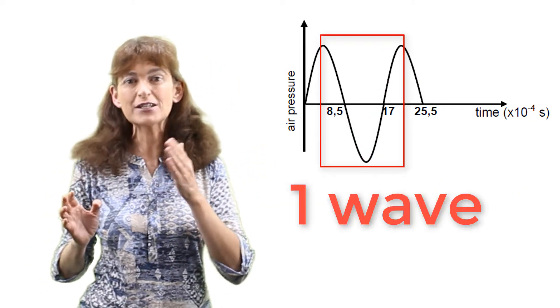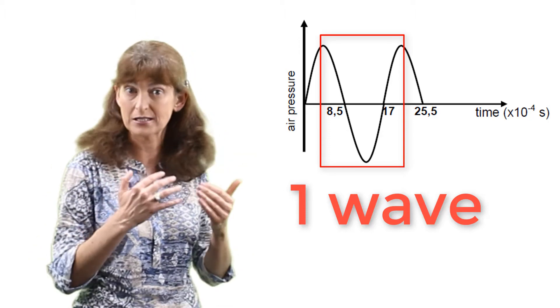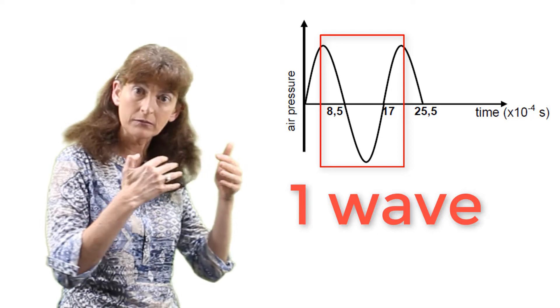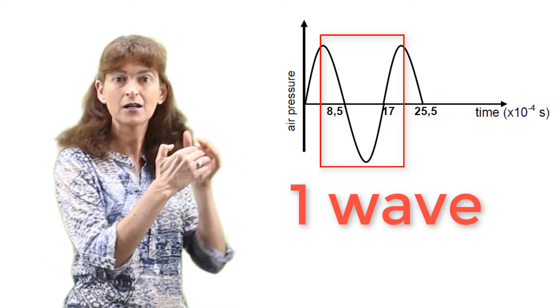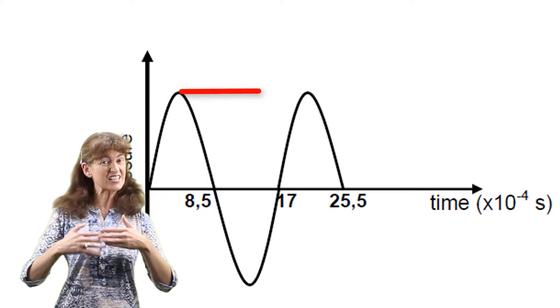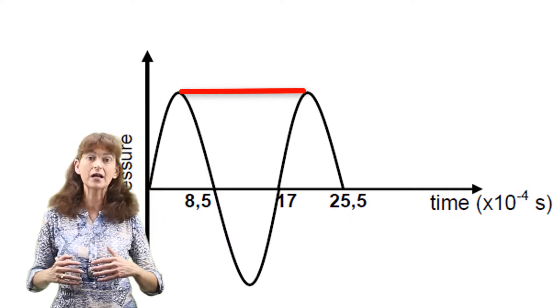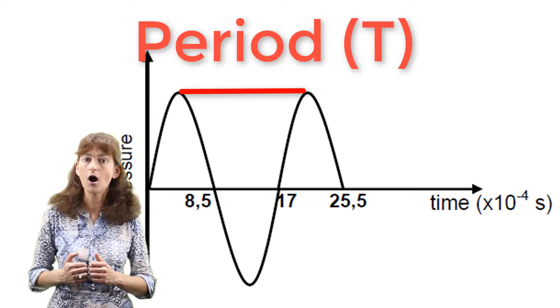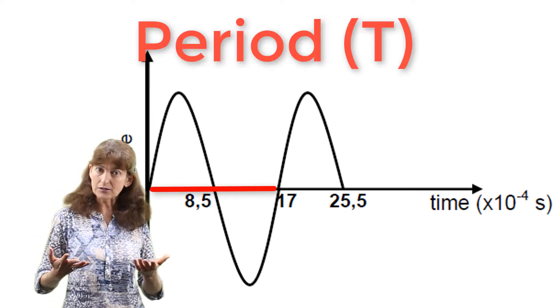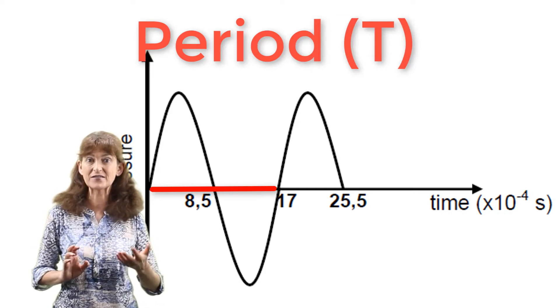Between any two consecutive points in phase, for example, compression, rarefaction, compression again, that is one full wave. The time period for one full wave is called the period of the wave. We can use these graphs to read off the period of the particular waves detected.